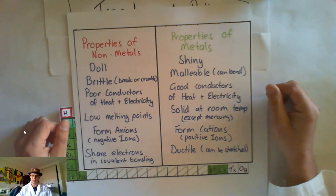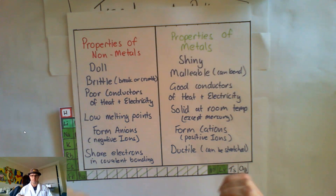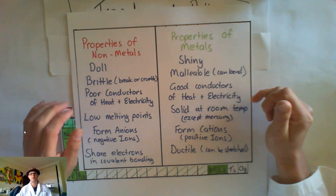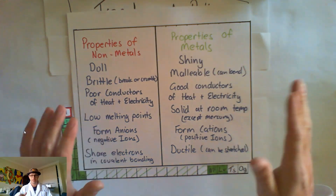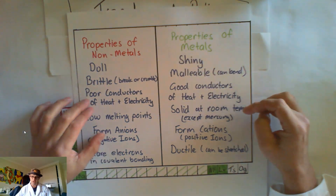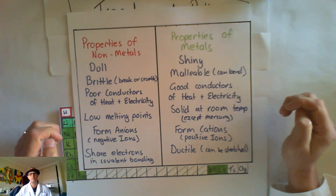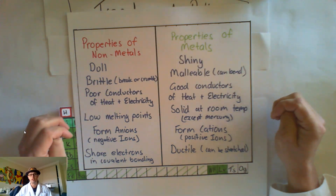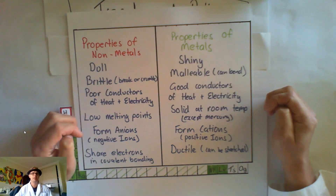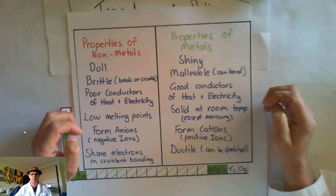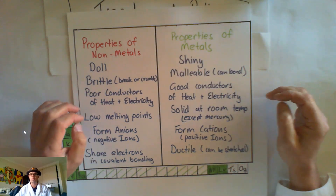When we come to the properties of metals: they're shiny. They're malleable, which means they can bend. They're good conductors of heat and electricity, and that links to the way that electrons float around in the electron sea in metallic bonds. They're solid at room temperature, except for mercury. Mercury is what we've always used for thermometers because it's a liquid at room temperature, and as it gets warmer it expands, which is why we use it in thermometers.